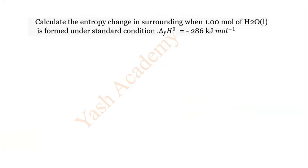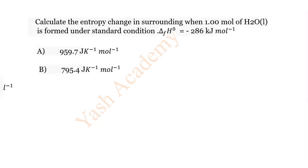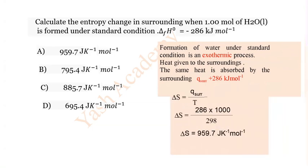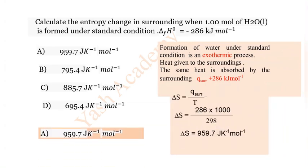Question 7: Calculate the entropy change in the surroundings when 1.00 mole of liquid water is formed under standard conditions, given the enthalpy of formation of water. The correct answer is A) 59.7 J per kelvin per mole.